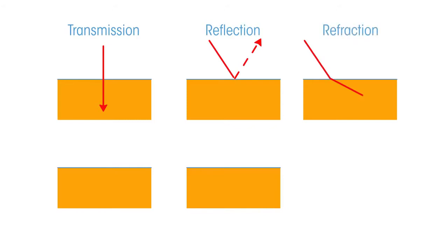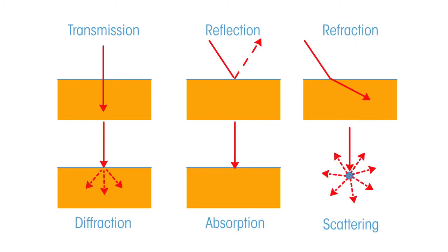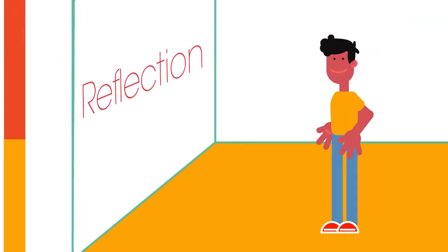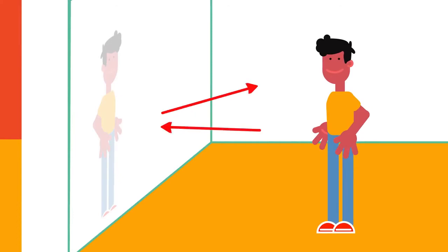Transmission, reflection, refraction, diffraction, absorption, and scattering are all typical wave behaviors. Reflection is when waves bounce off an object.